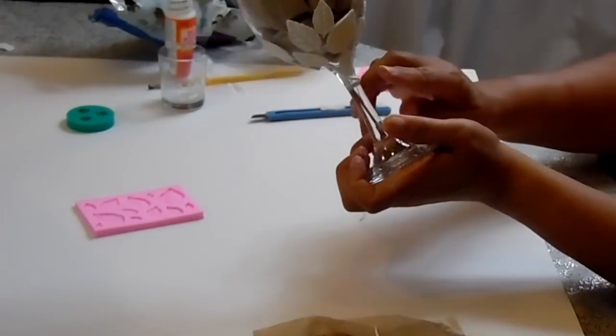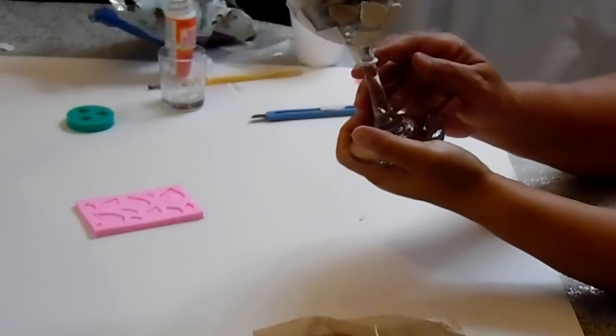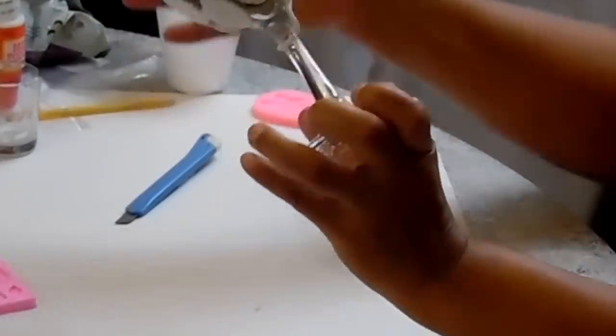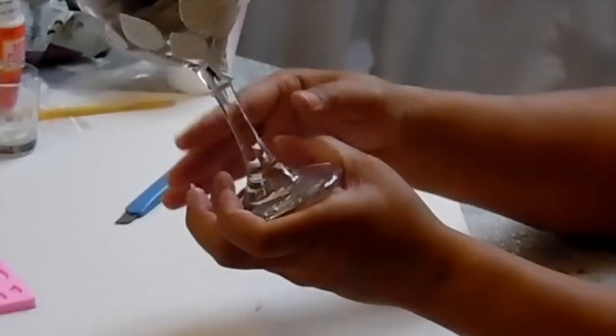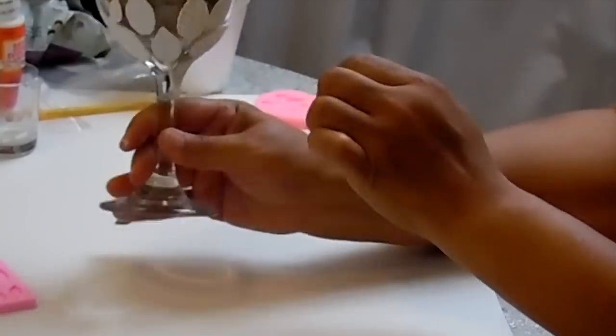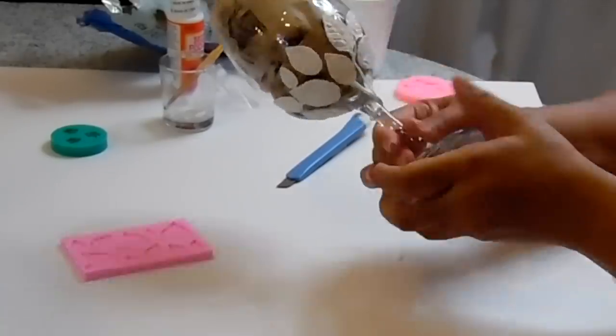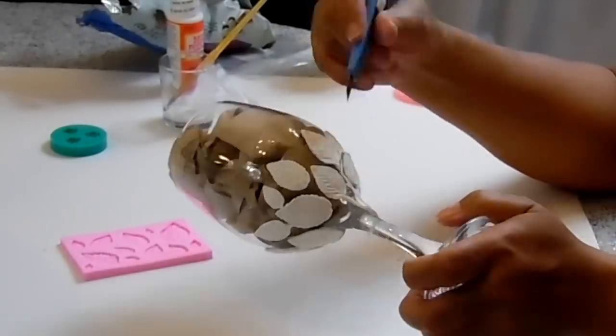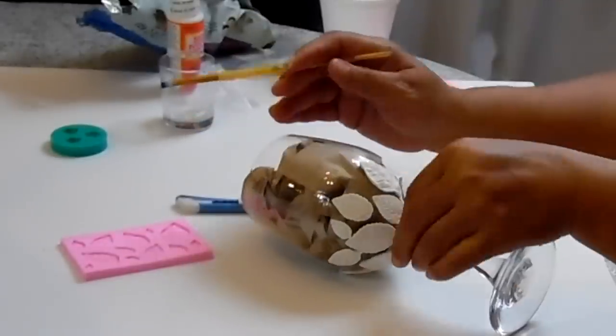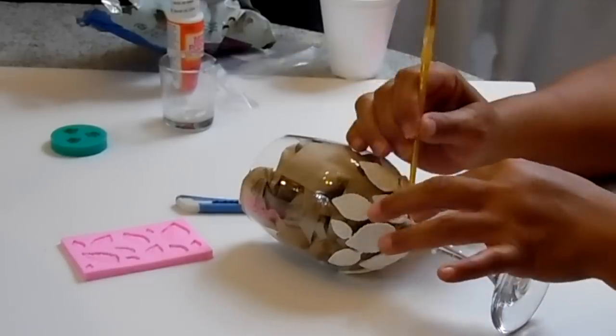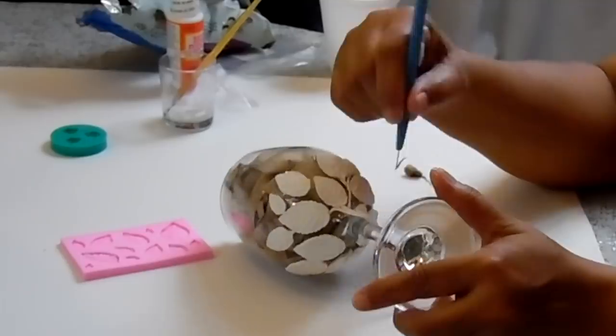At this point, I decided to stop adding clay to the base of my glass because I wanted to be able to hold on to it as I added more stems to the leaves. As you can see, I'm using the exacto knife to help me arrange the stems on the leaves.